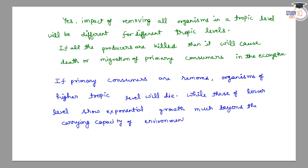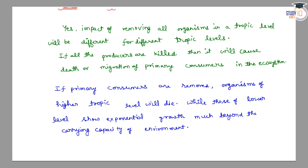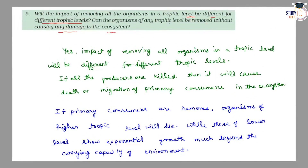इसका मतलब जो भी नीचे level के producers होंगे, वो बहुत ज्यादा growth दिखाने लगेंगे, जिससे environment को नुकसान पहुंचेगा। (This means the producers at the lower level will show excessive growth, causing damage to the environment.)